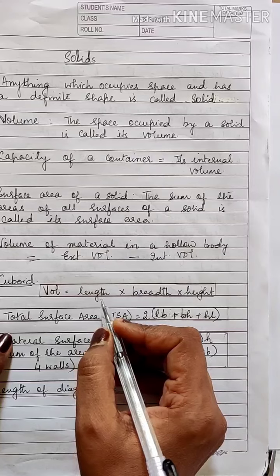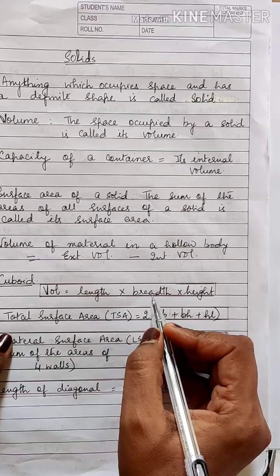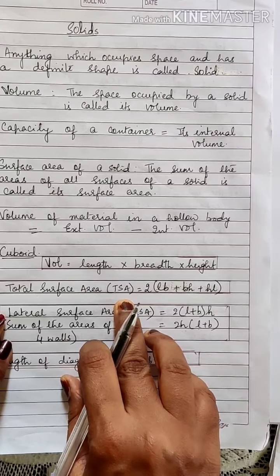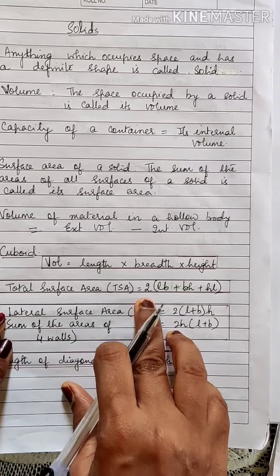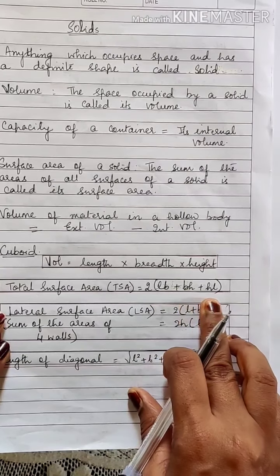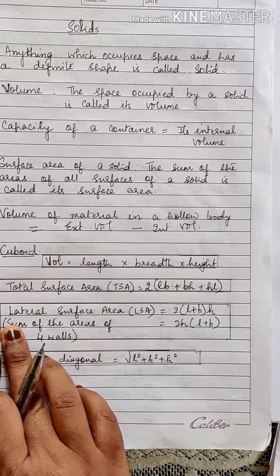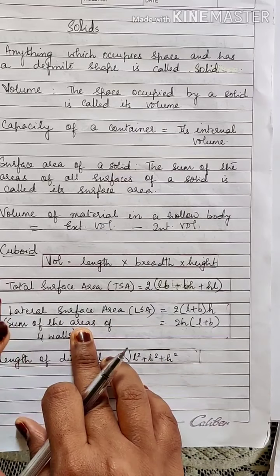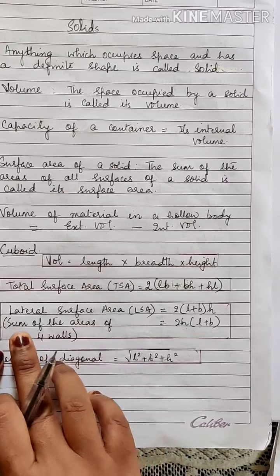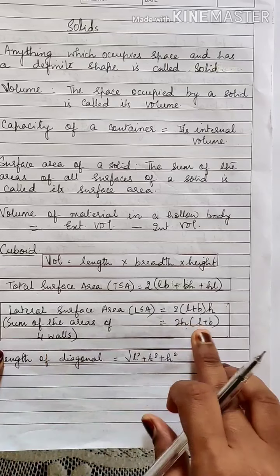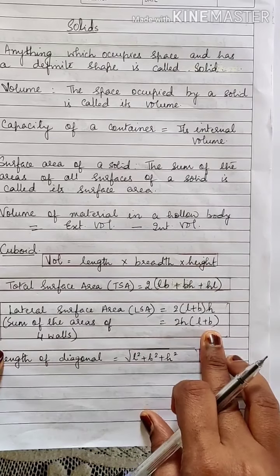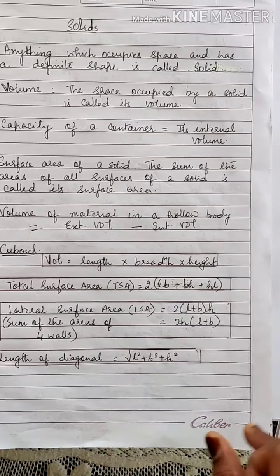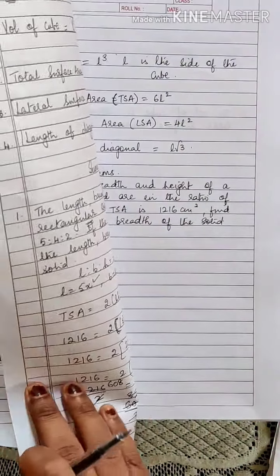Volume of a cuboid is given by length × breadth × height. Total surface area (TSA) is given by 2(LB + BH + HL). Lateral surface area (LSA) includes only the four walls, given by 2H(L + B). The length of the diagonal of a cuboid is given by √(L² + B² + H²).